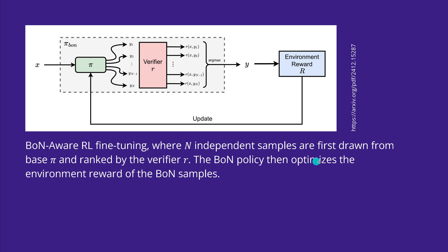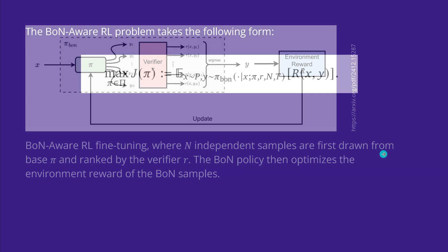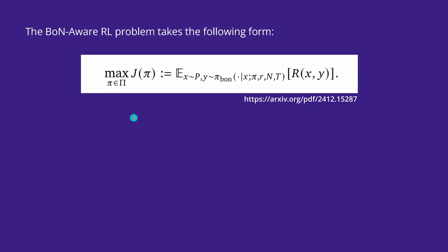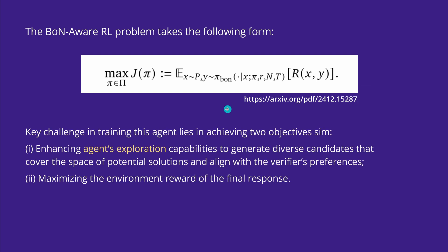The best of N policy optimizes the environmental reward of the best of N samples. This problem takes a very specific mathematical form that also includes our reward function. Now let's have a look at this.